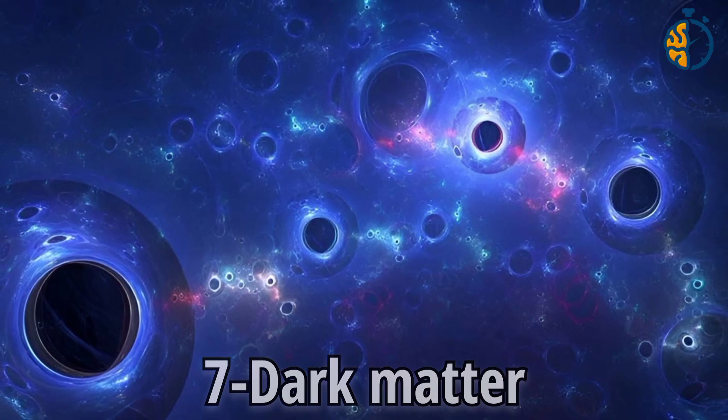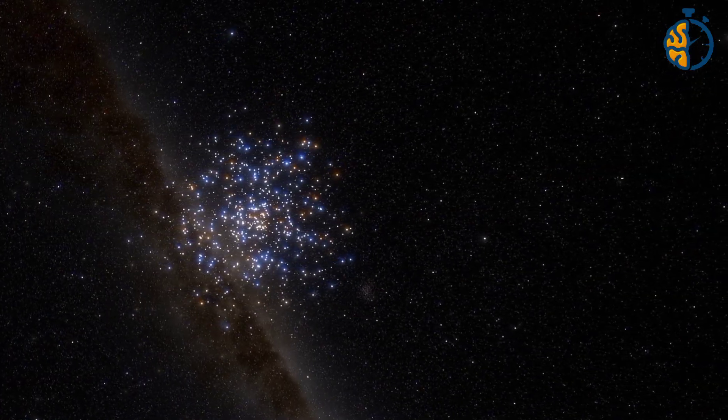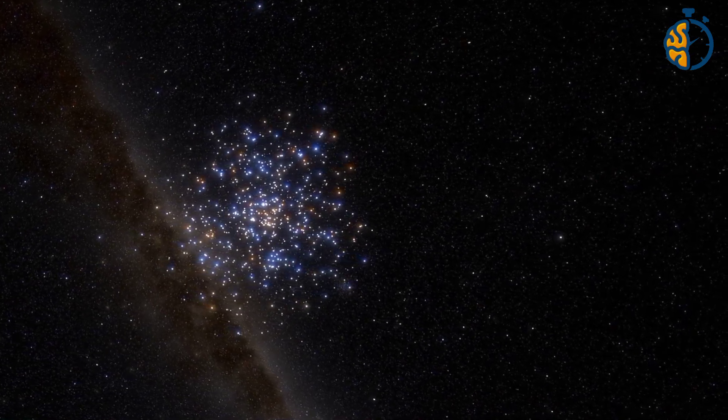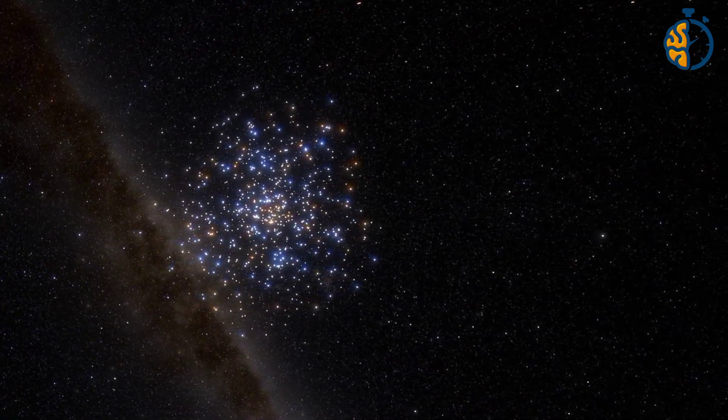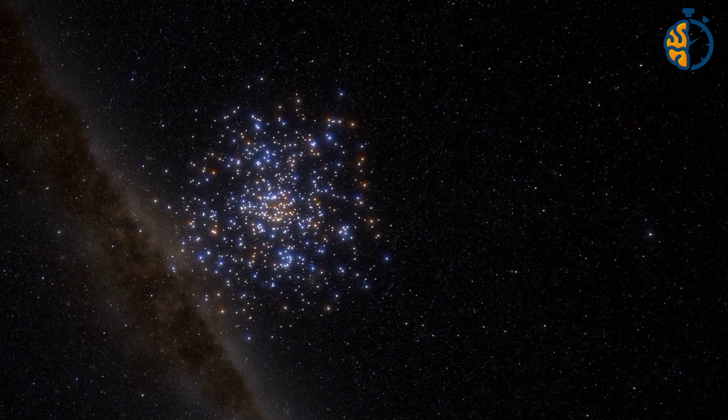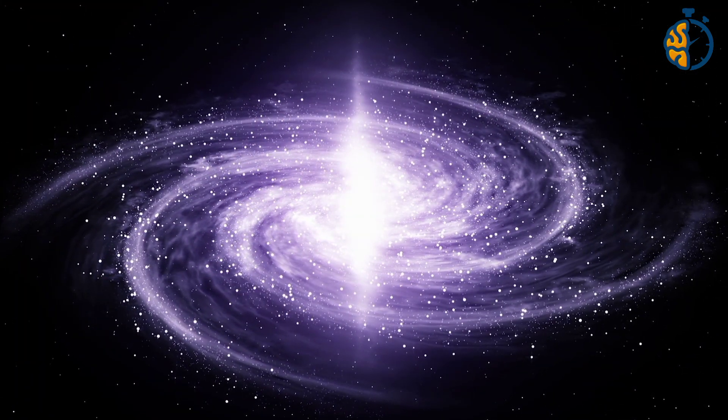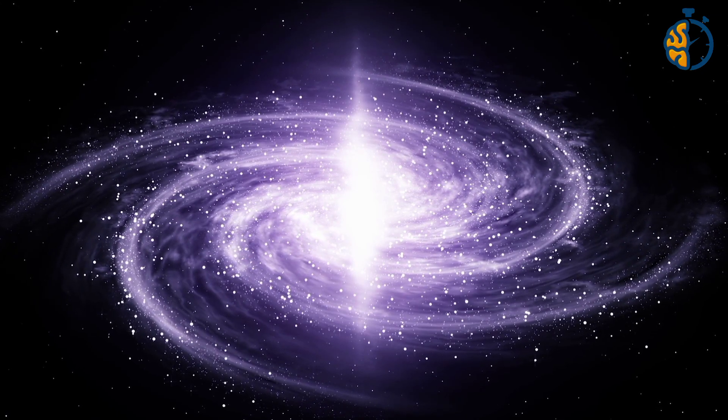Number 7. Dark matter. It is a substance that does not absorb or emit light, and light specifically means photons, which means that dark matter does not emit any detectable waves. Although dark matter does not interact with light, it has mass and thus affects its gravity on the rest of the bodies, so the presence of dark matter affects the orbits of stars.